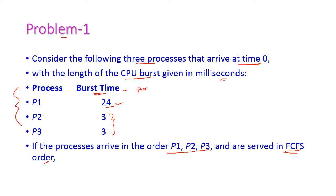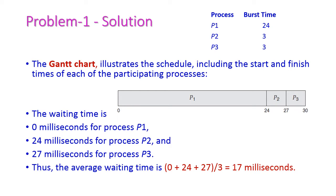The arrival time of all the processes is 0. Now let us solve this problem by using first come first serve scheduling algorithm by drawing the Gantt chart. The purpose of the Gantt chart is to illustrate the scheduling — that is, the scheduling of all processes including start and finish time of each participating process. We are having 3 processes and the x-axis represents time in milliseconds.